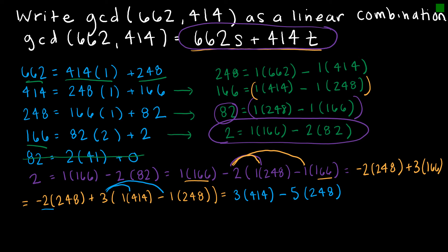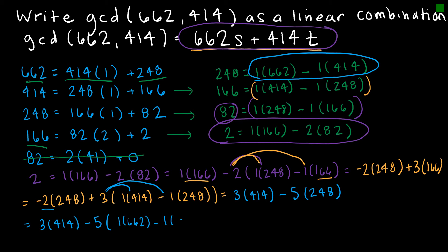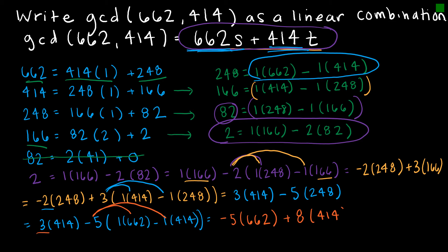Then I substitute again: this is 3 times 414 minus 5 times (1 times 662 minus 1 times 414). I'm looking for how many 662s and how many 414s. In terms of 662s, I have negative 5 times 1, so negative 5. In terms of 414s, I have negative 5 times negative 1, which is positive 5, plus another 3, giving plus 8 times 414. That would be my final answer.